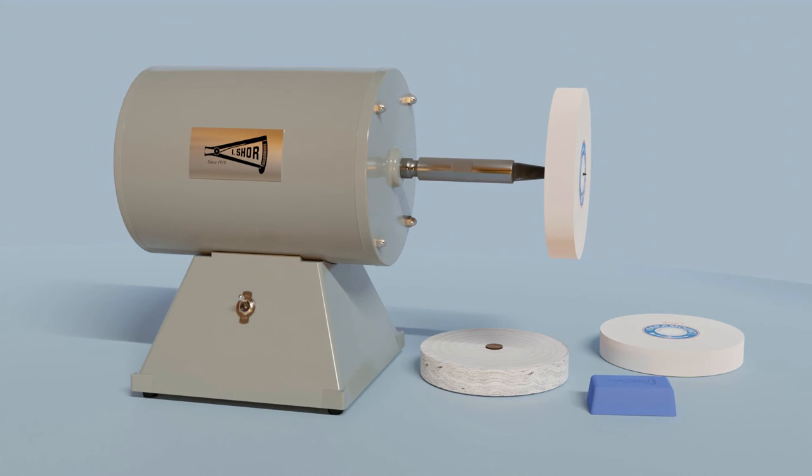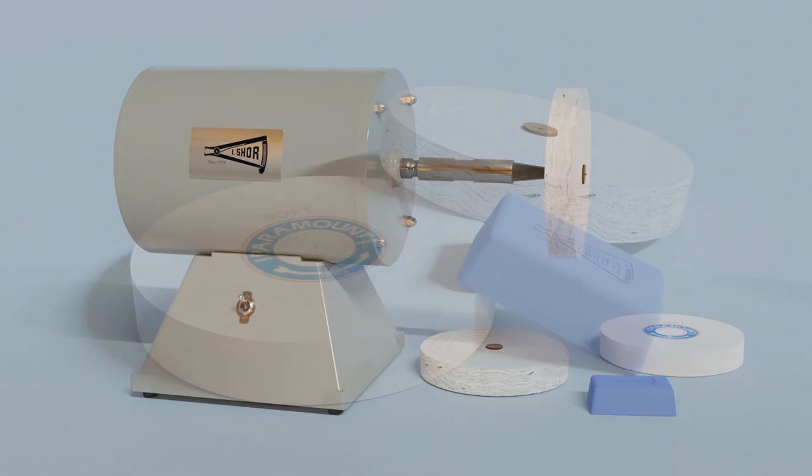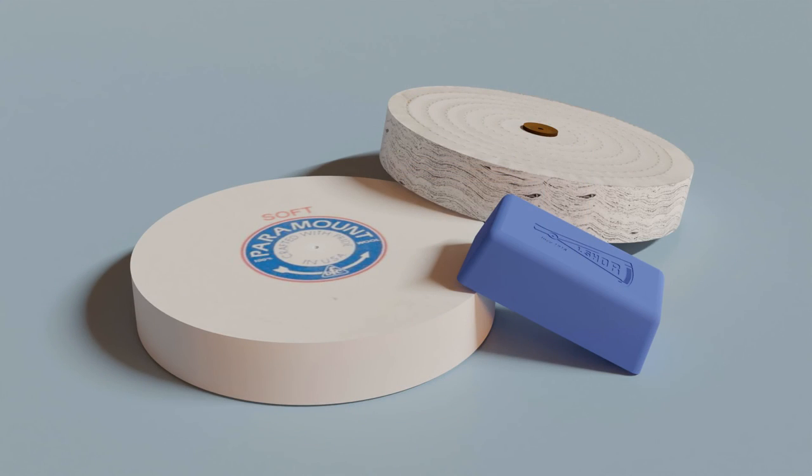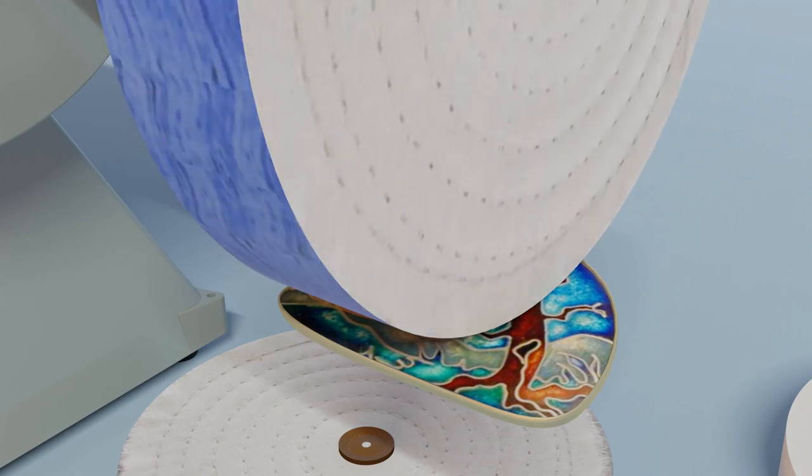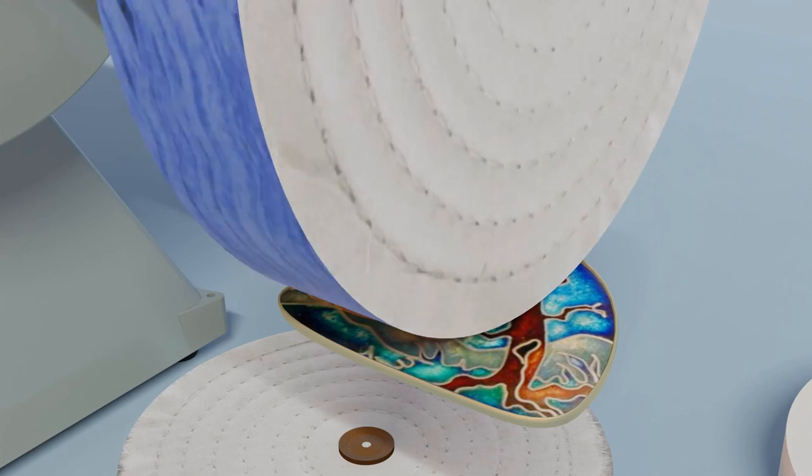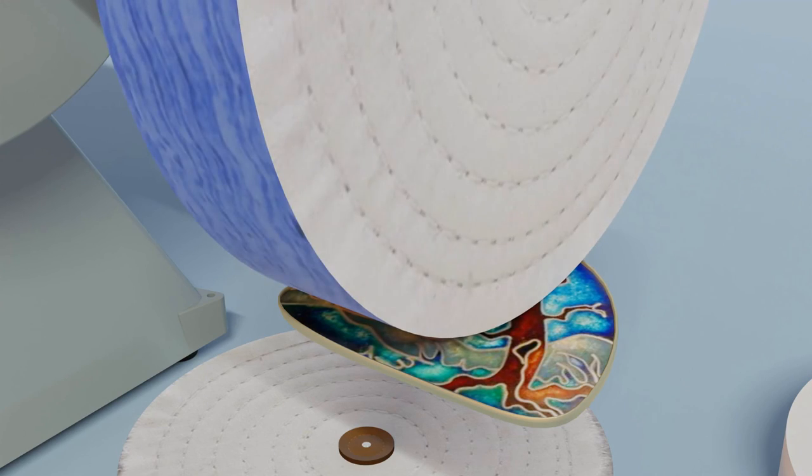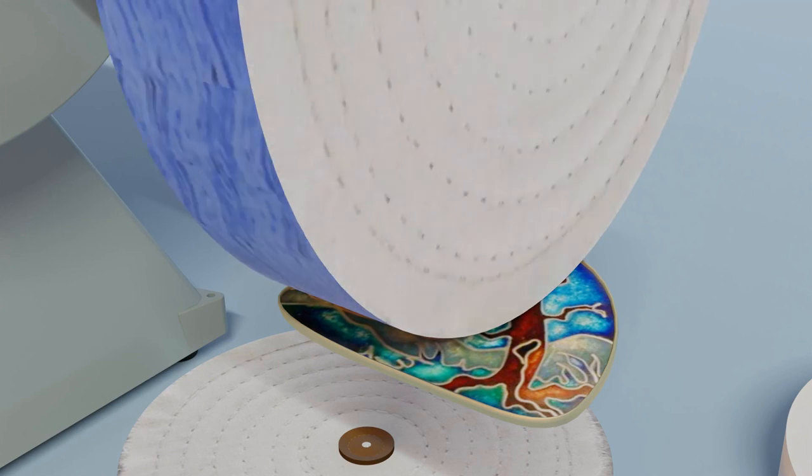Use a standard soft felt wheel or a muslin buff at 1250 rpms. We recommend using blue platinum polishing compound. Do not press the DuraNamel against the polishing wheel. This could cause it to burn or to expand and then contract, popping the DuraNamel off the piece. Instead, use light, soft pressure for best results.